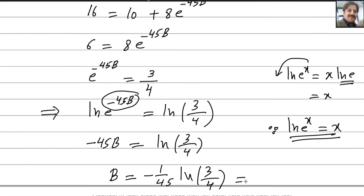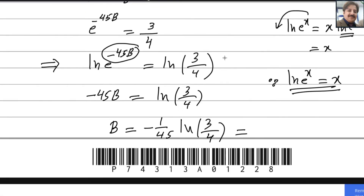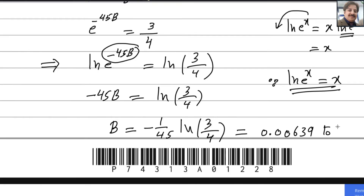Write this in your calculator and you get the answer. We want the answer to 3 significant figures. The answer in the calculator is 0.00639. Note that the zeros on the extreme left are not counted as significant — we count only the digits to 3 significant figures. So 0.00639 is the answer for the second part.